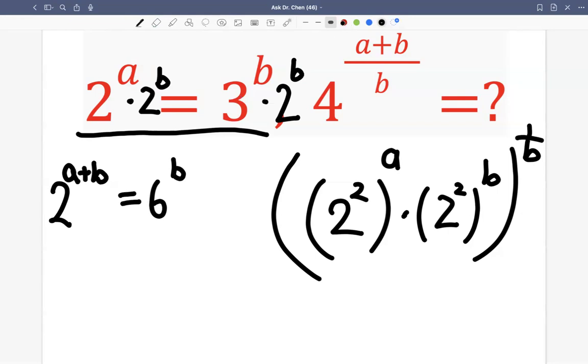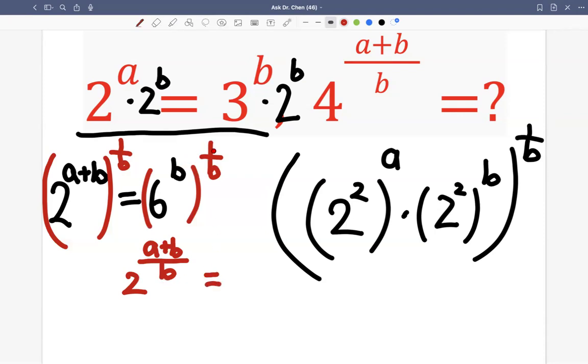But then we need to raise both sides by one over b. So we get two to the a plus b divided by b, right? Because one over b times a plus b can be written as a plus b divided by b. Then it equals to, well, b times one over b, that's one, equals to six.